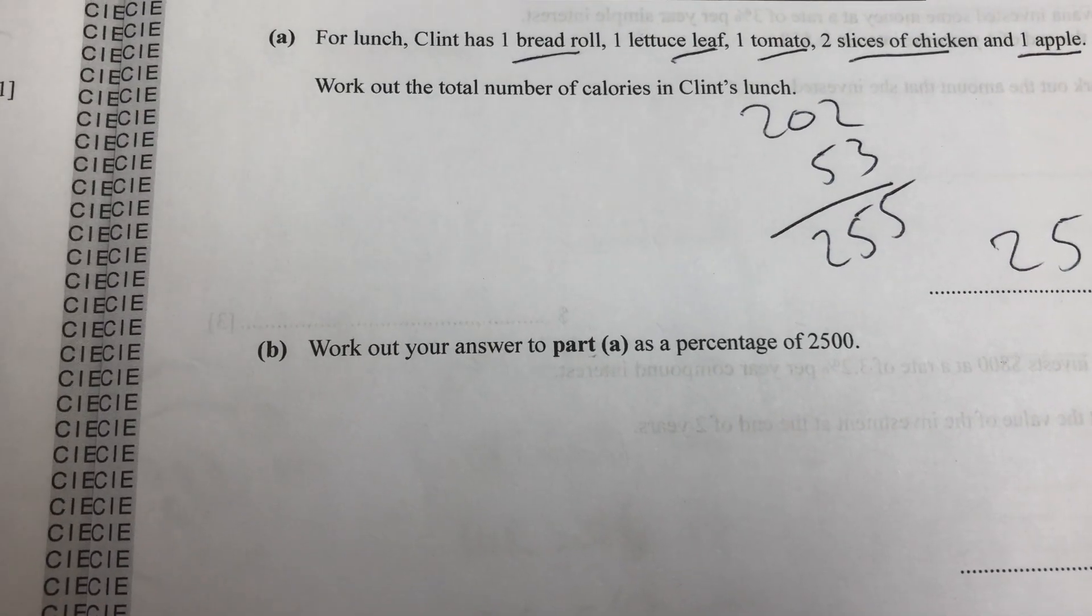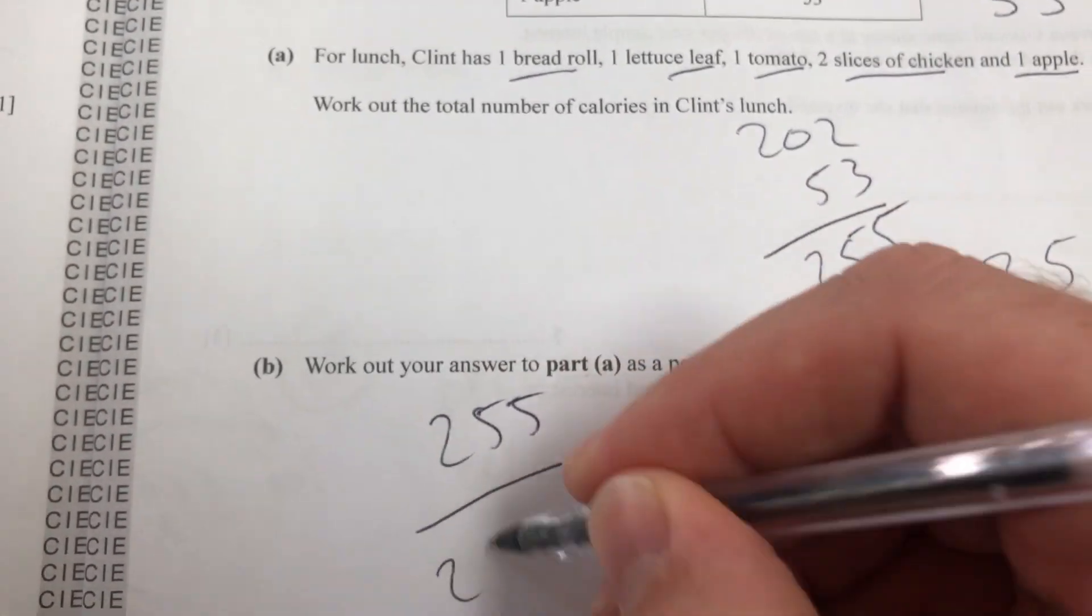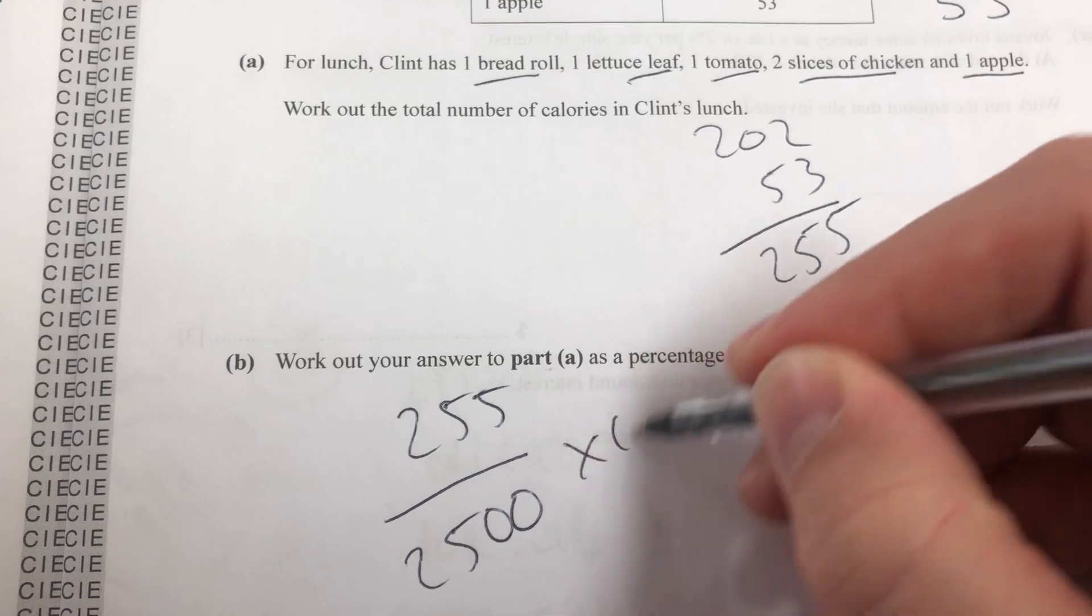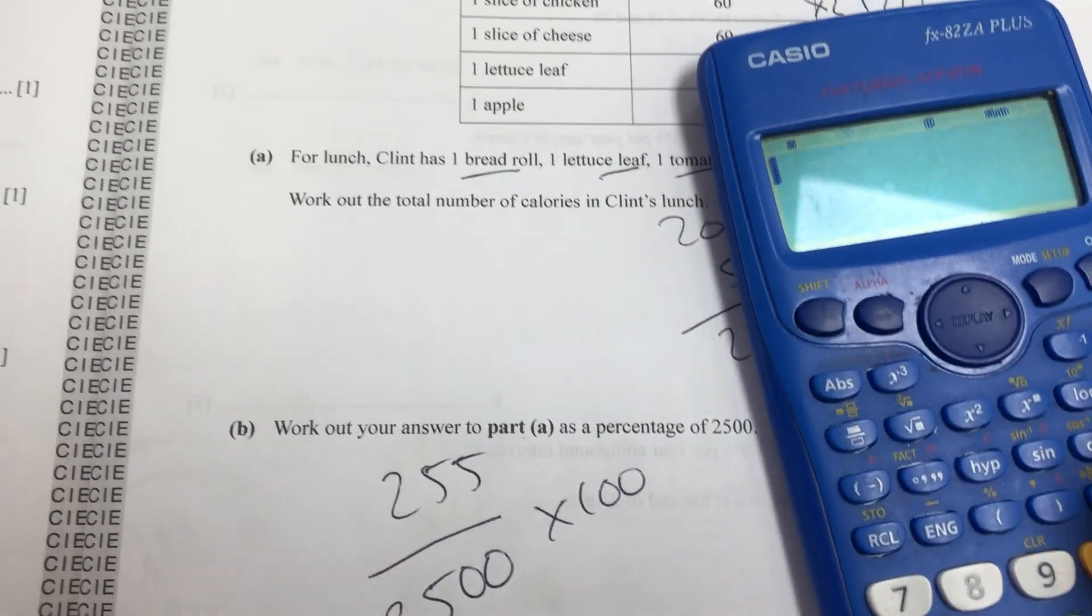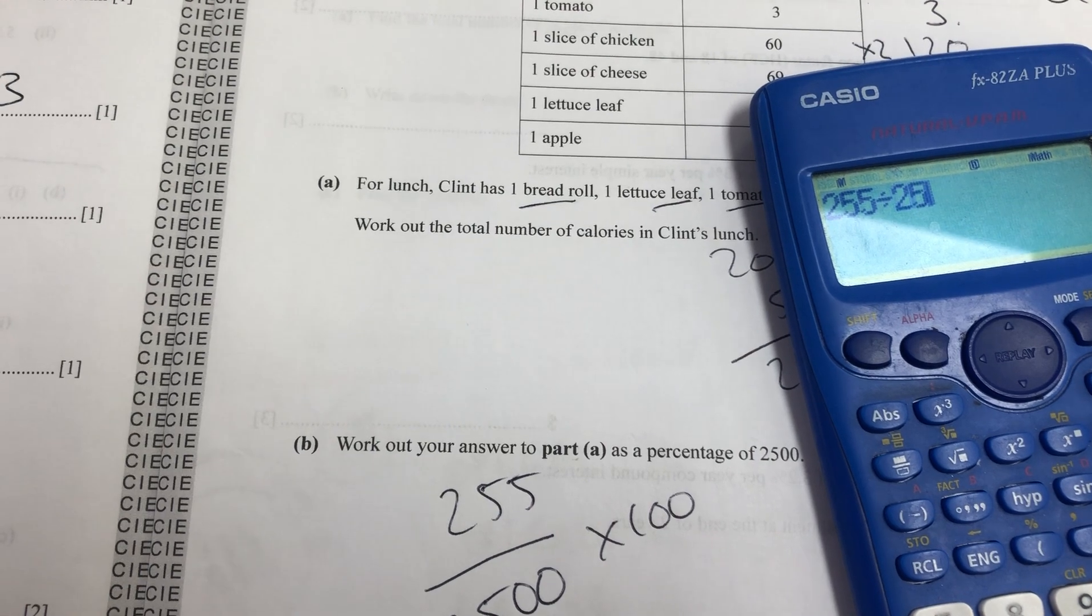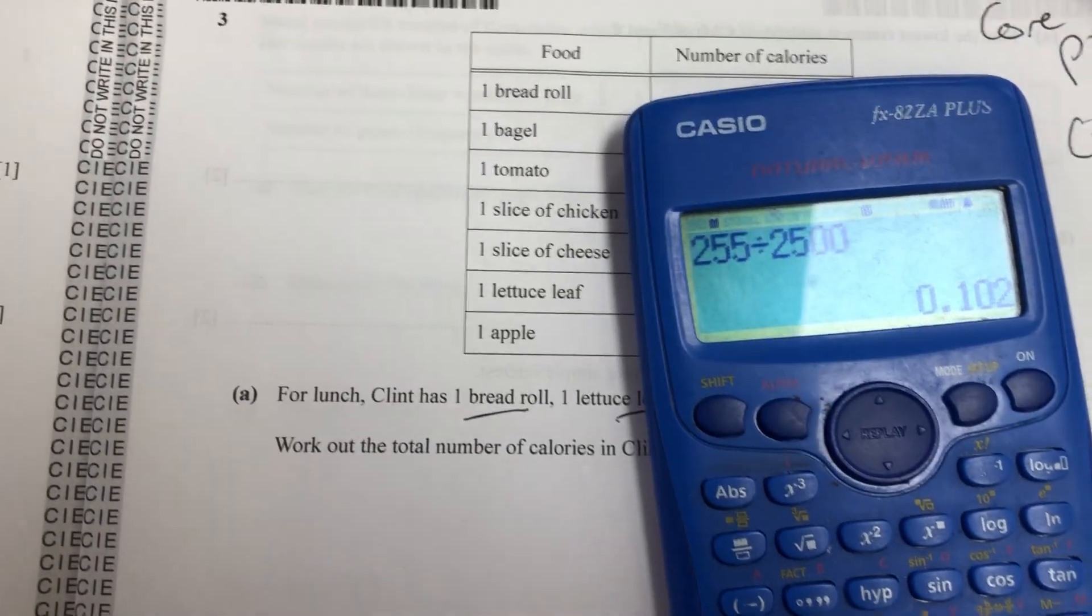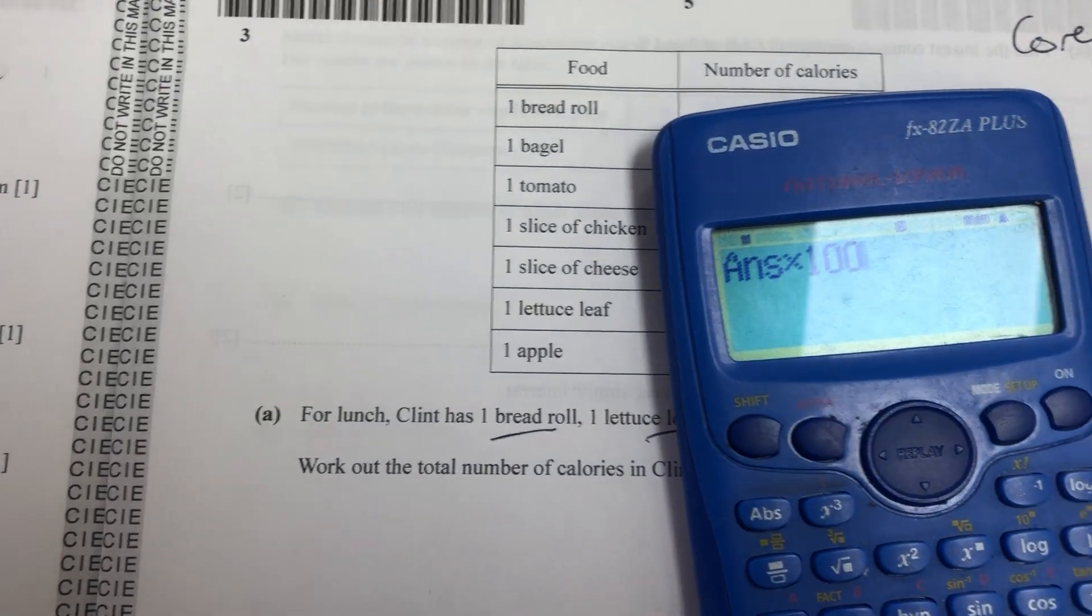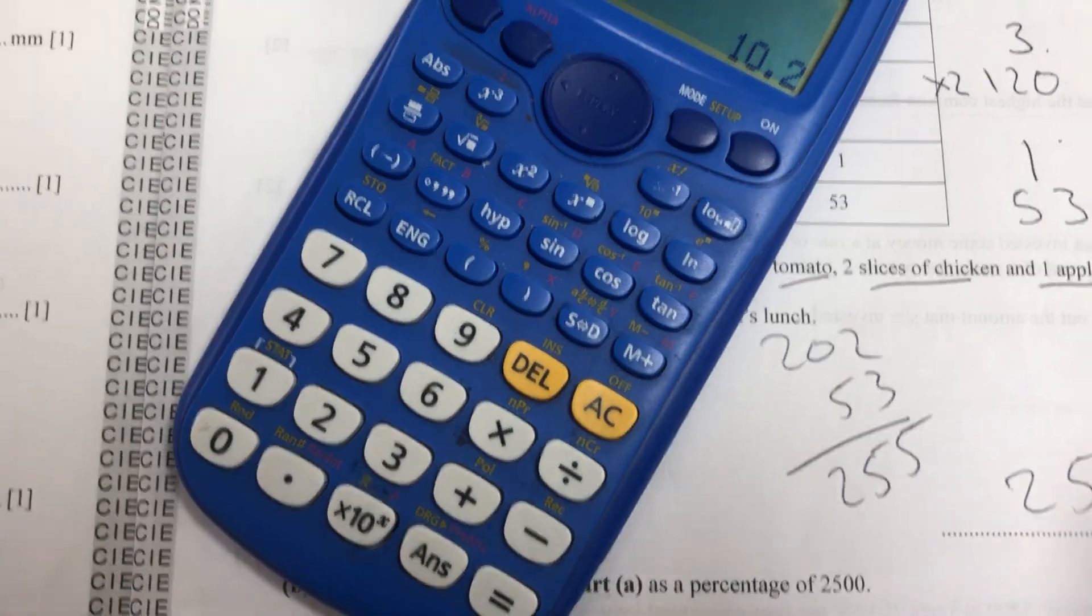Then work out that as a percentage of 2,500. So 255 divided by 2,500 is 0.102 as a decimal, times by 100, 10.2%.